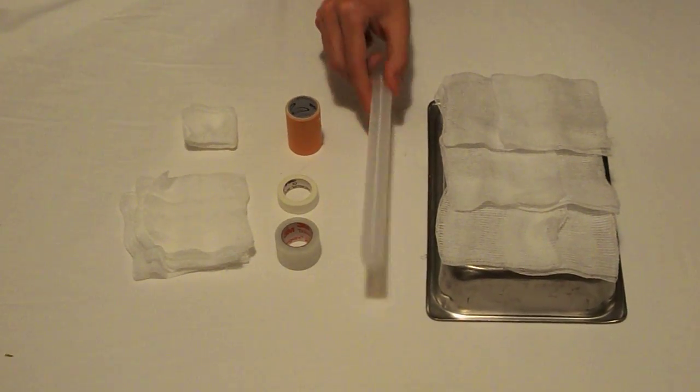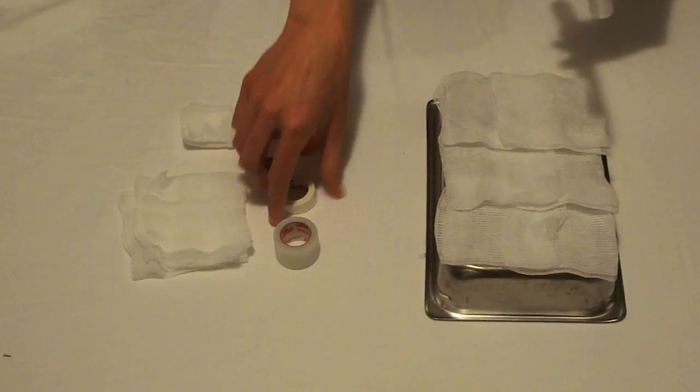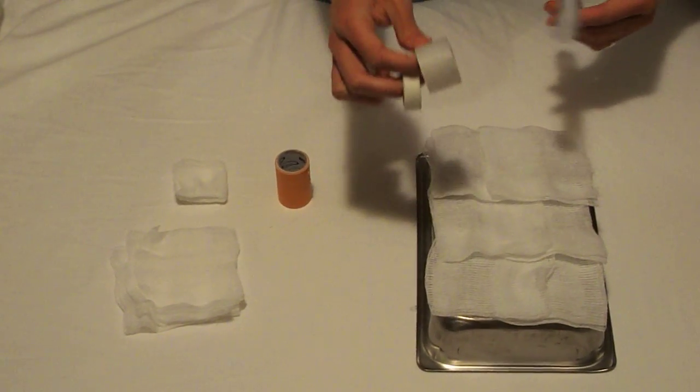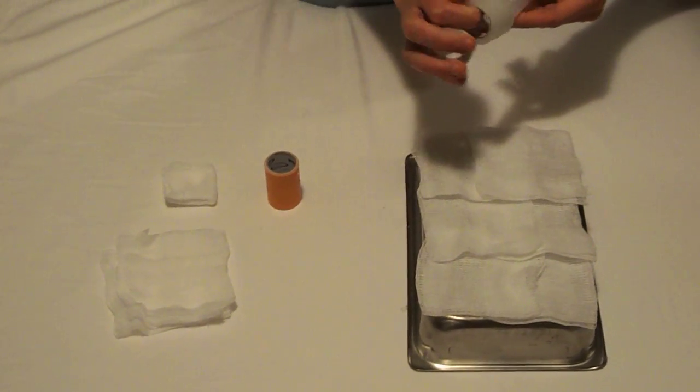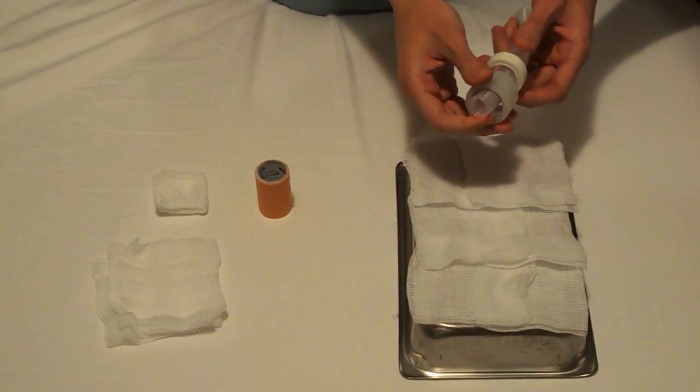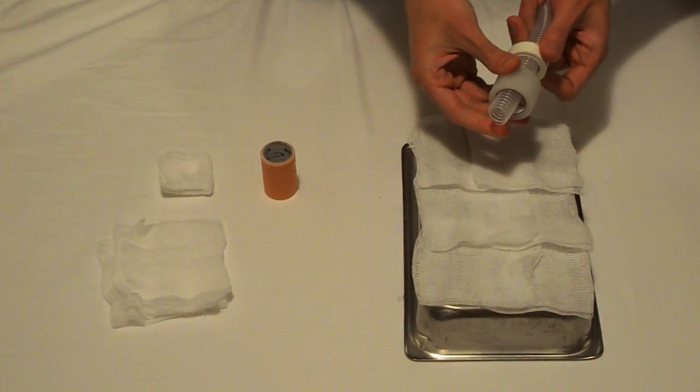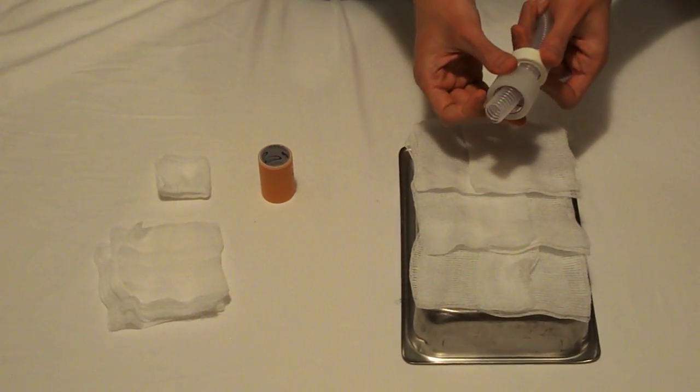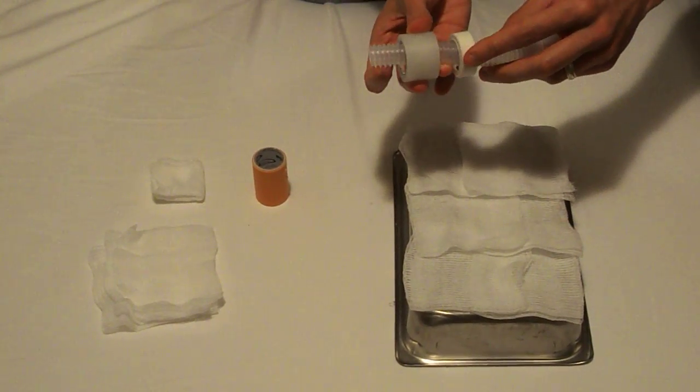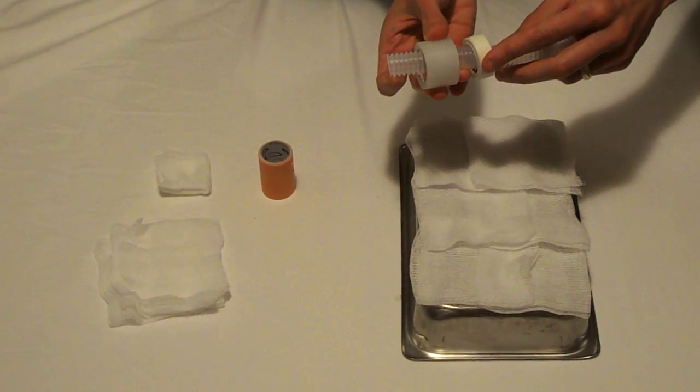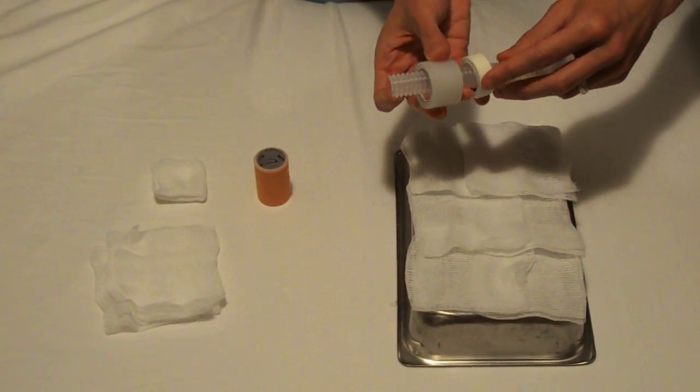Next, take your trachea and your cricoid and thyroid cartilages and place them on the trachea. You'll notice that I took a lot of the tape off both of these rolls to make it so that the trachea will come closer to the surface of the skin to mimic reality a little bit better.